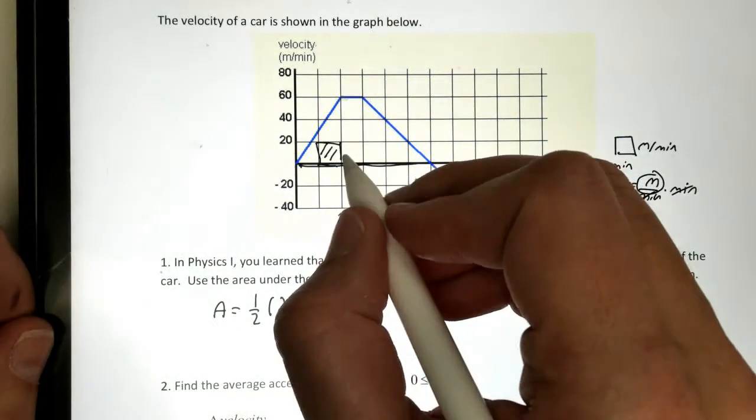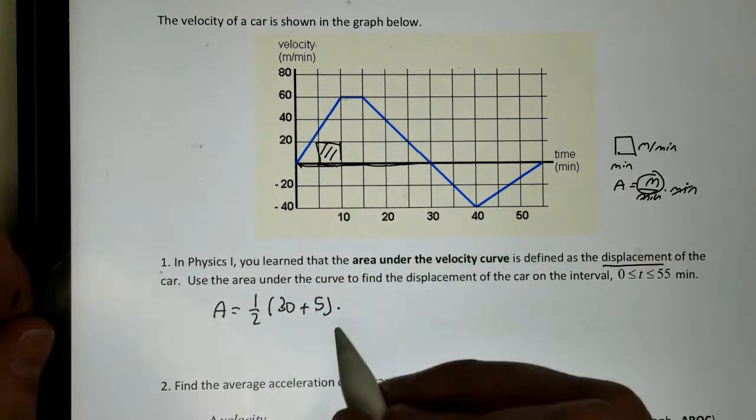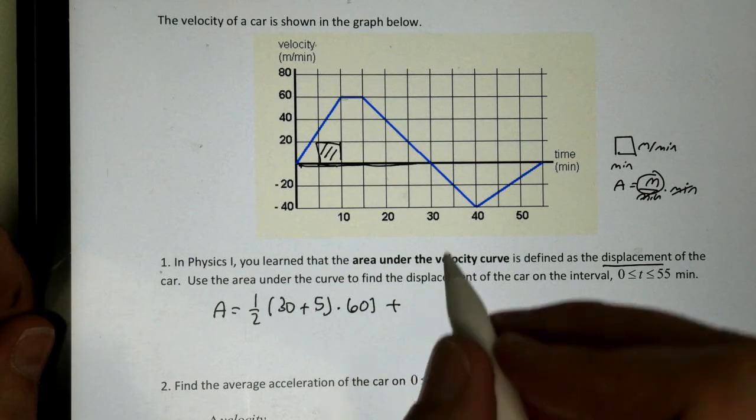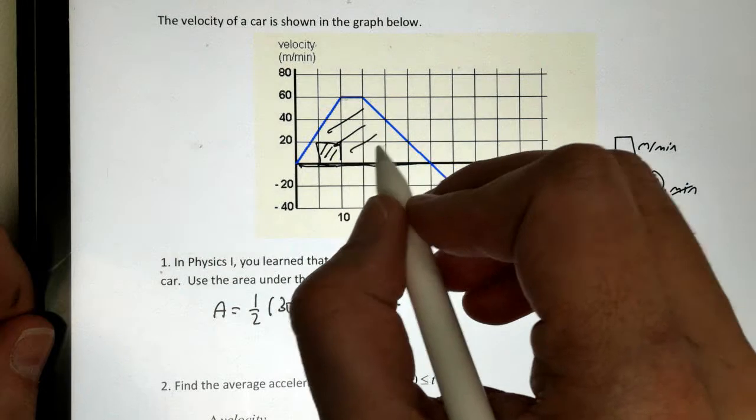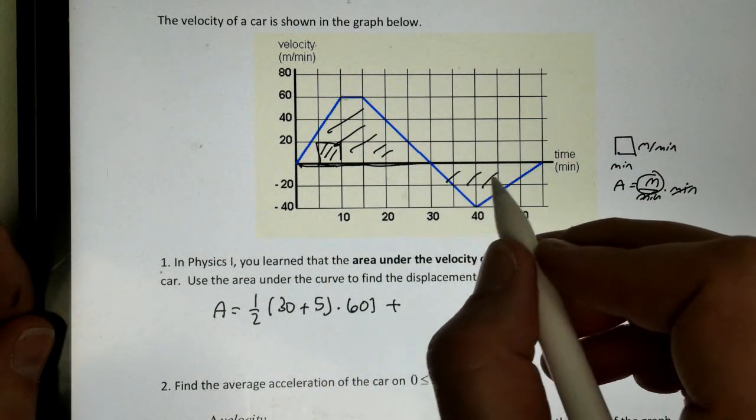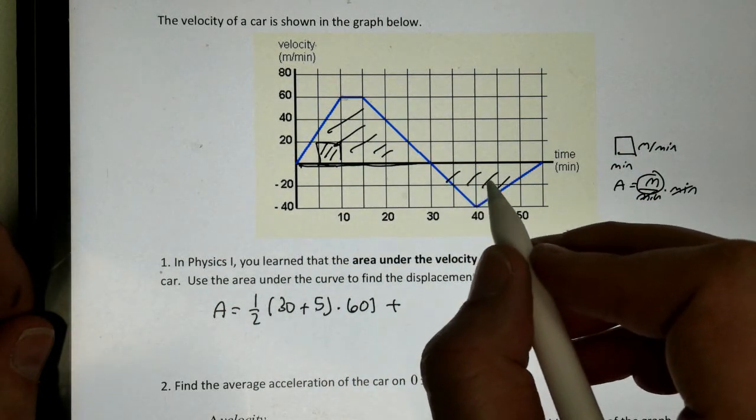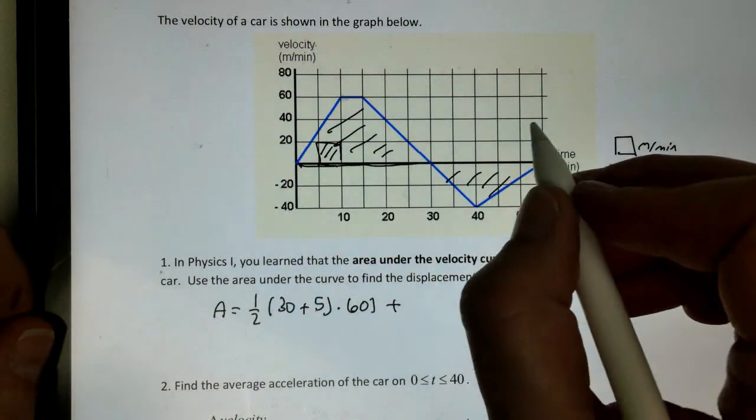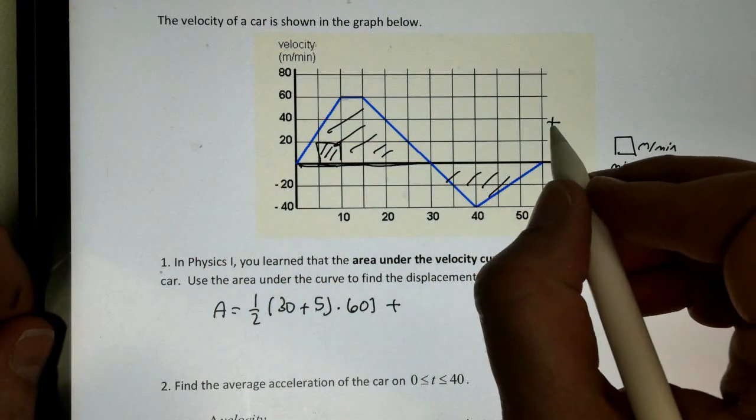Plus, now this one gets a little bit tricky because I just found the area of my trapezoid. Now we've got to find the area of our triangle, but we have a problem with the triangle. This is my velocity graph.